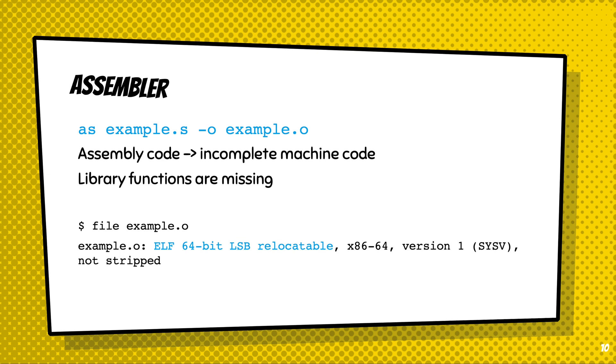After compilation, the generated assembly will be sent to the assembler, which will generate incomplete machine code. The reason why we call it incomplete is because library functions will be missing. This code will not be able to execute. Actually, if you check the type of the file, you'll see that this file is called a relocatable file.